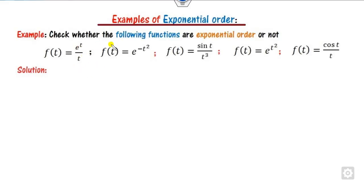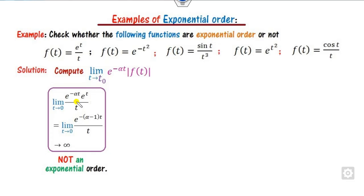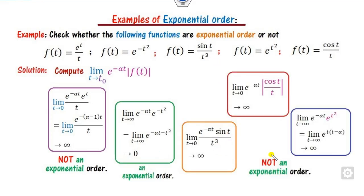Looking at the same examples used for piecewise continuity: the first function is not defined for t near 0. The limit as t approaches 0 of e^(t)/t — when t approaches 0, e^t is 1 but 1/t goes to infinity, so it is not finite, meaning this is not of exponential order. For the second function, as t approaches infinity it gives e^(infinity) which is infinity, so that is not finite either. For the remaining cases, checking their limits yields infinite values, so they are also not of exponential order.